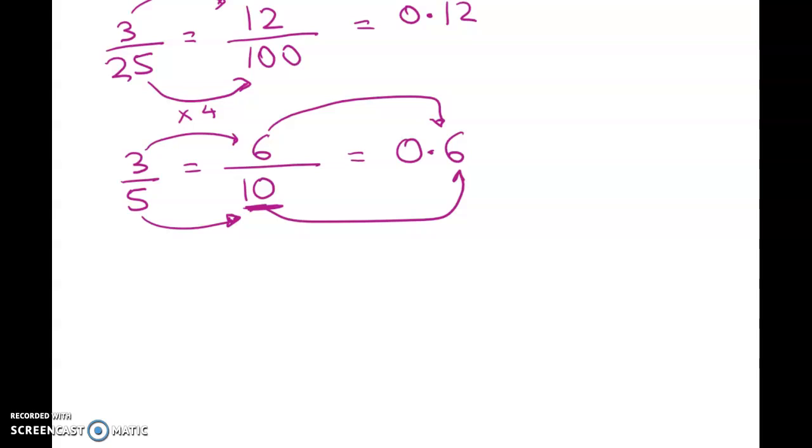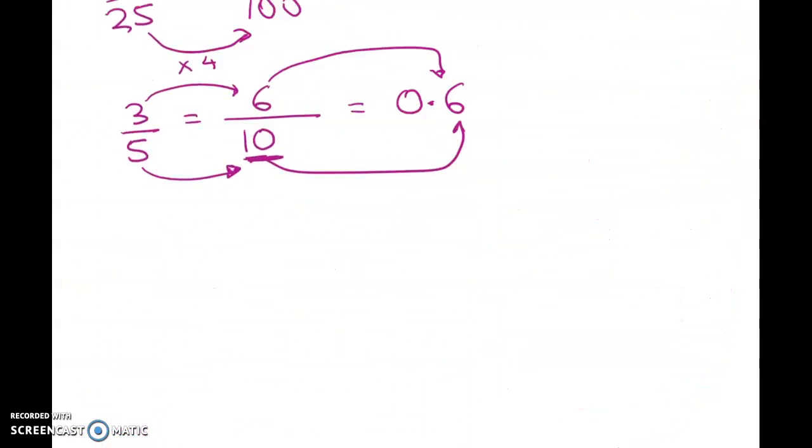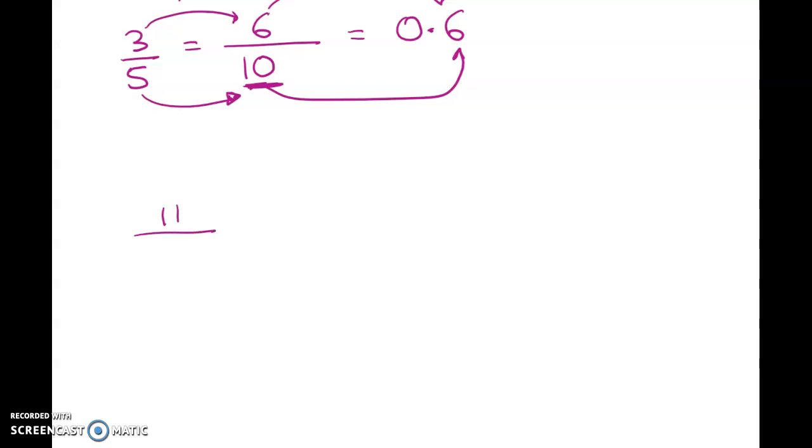The last one here—11 out of 250. I can't convert it to a decimal quite yet because I want to have a power of 10 here. So 250 times 4 will give me 1000, and 11 times 4 will give me 44.